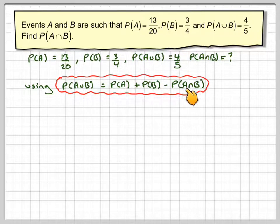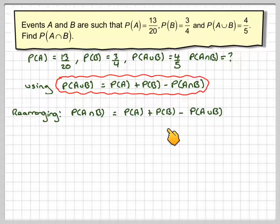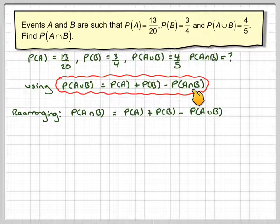Now we can rearrange this to make this the subject. So if we rearrange it, we get the probability of A intersection B is equal to the probability of A plus the probability of B minus the probability of A union B. So basically you take that over here, and then you take this over here.